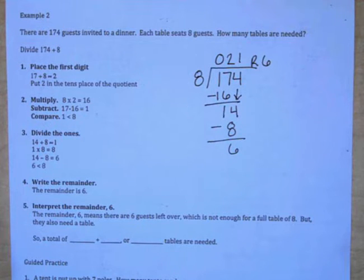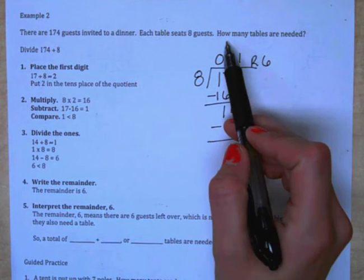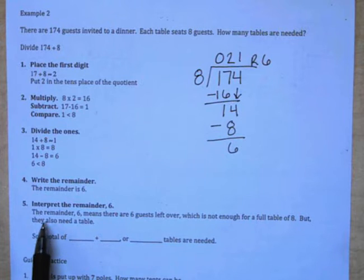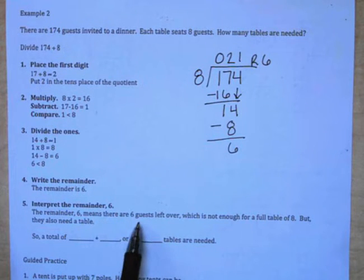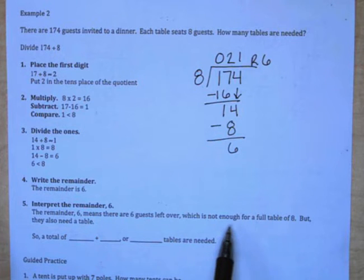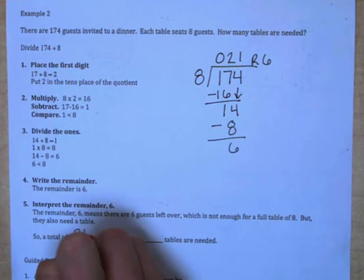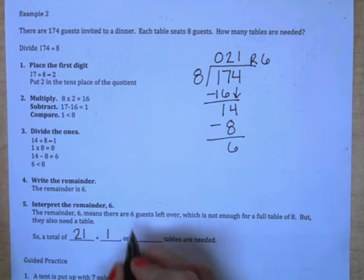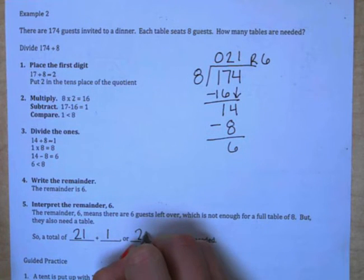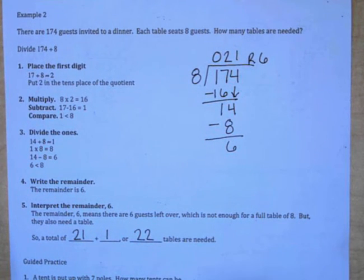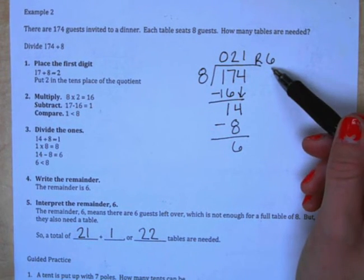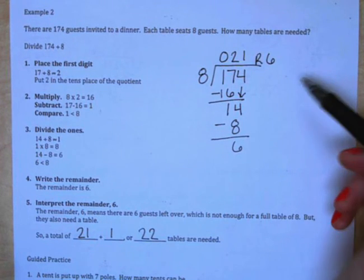All right, so this question is much different than example 1, so we need to answer it in a different way. It asks us how many tables are needed. The remainder of 6 means that there are 6 guests left over, which is not enough for a full table of 8, but they still need a table for those 6 people to sit at. So, we have 21 tables that are full, plus one more table for the extra 6 guests, which means that we have 22 tables that are needed. So think about it, you can't have part of a table to fit these 6 people, so we have to round up and add one more whole table to our 21.